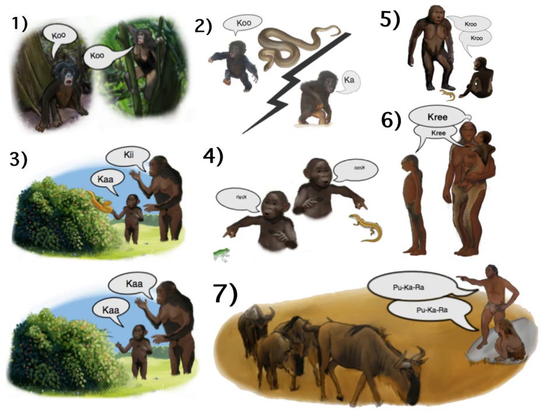One can subdivide approaches to the origin of language according to some underlying assumptions. Continuity theories are built on the idea that language exhibits so much complexity that one cannot imagine it simply appearing from nothing in its final form; therefore it must have evolved from earlier pre-linguistic systems among our primate ancestors. Discontinuity theories take the opposite approach: that language, as a unique trait which cannot be compared to anything found among non-humans, must have appeared fairly suddenly during the course of human evolution.